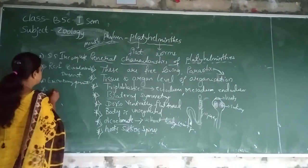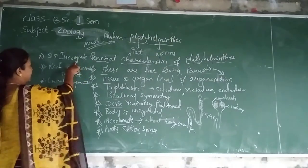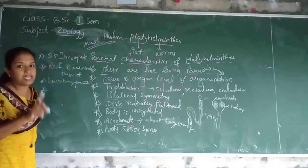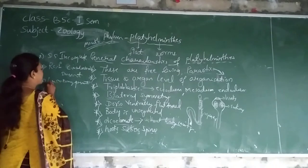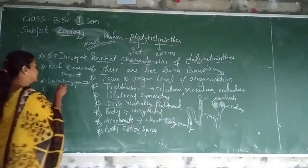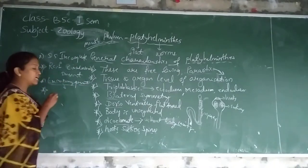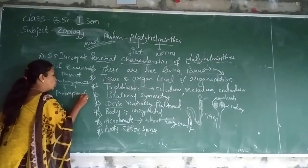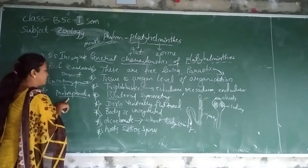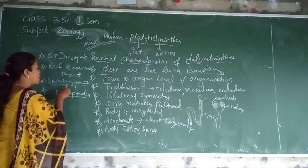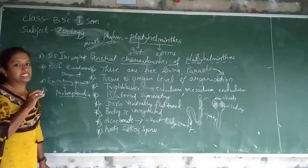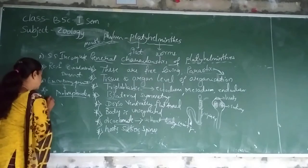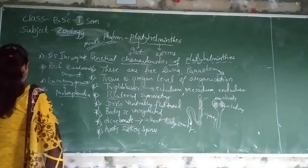Although the digestive system is incomplete — mouth is present but anus is absent — there is a special type of protonephridia present. With the help of protonephridia, the excretory system is completed. But the digestive system remains incomplete. That is the main characteristic of the excretory system.